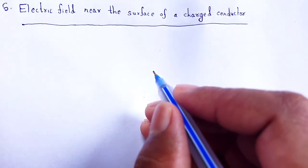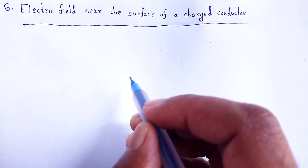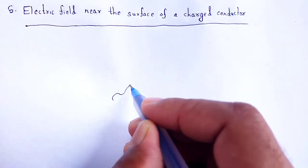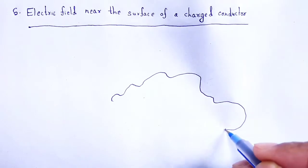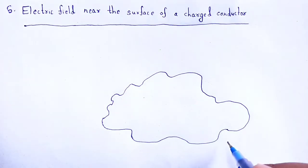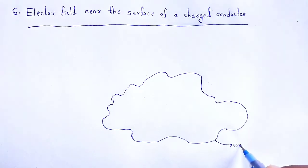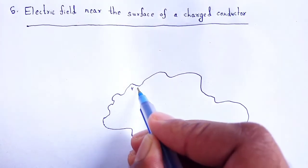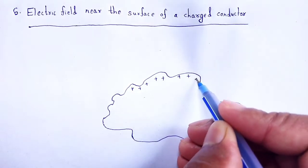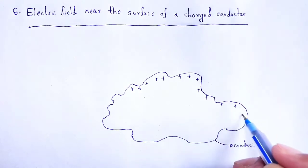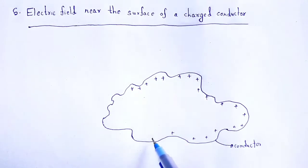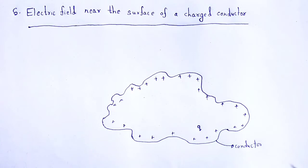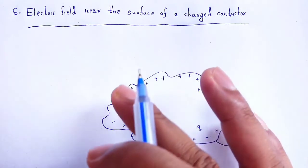Let us consider a charge Q. Q amount of charge is given to a conductor which is of an arbitrary shape. Q amount of charge is given to that conductor. Let the surface charge density of the conductor be sigma.